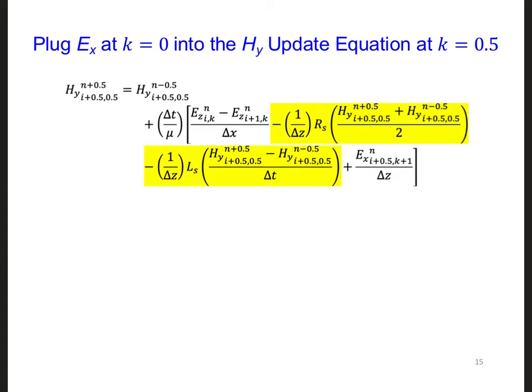This is that same update equation for HY just above the surface of the ground after we plug in the expression for the EXs. So these are the two terms, and we're just multiplying both by 1 over delta Z since that's required for each of the EXs.